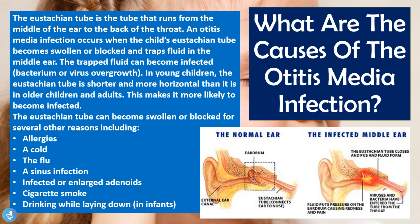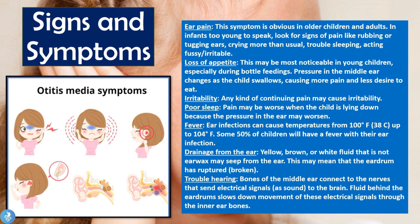Now let's explore the signs and symptoms of this disease. The first thing patients will complain about is ear pain — this symptom is obvious in older children and adults, but in infants too young to speak, we can look for signs of pain like rubbing or tugging at the ears, crying more than usual, trouble sleeping, or acting fussy and irritable. These patients will also have a loss of appetite, most noticeable in young children especially during bottle feedings, as pressure within the middle ear changes when the child swallows, causing more pain and less desire to eat.